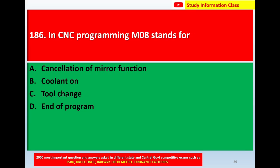Next, question number 186: In CNC programming, M08 stands for — option A: cancellation of mirror function, option B: coolant on, option C: tool change, option D: end of program.